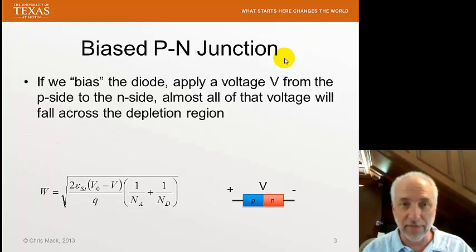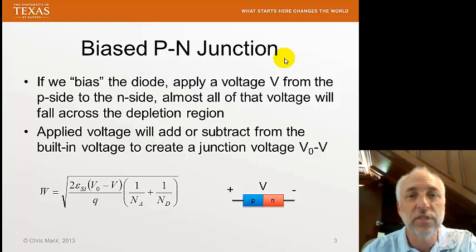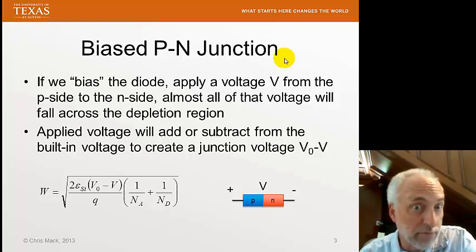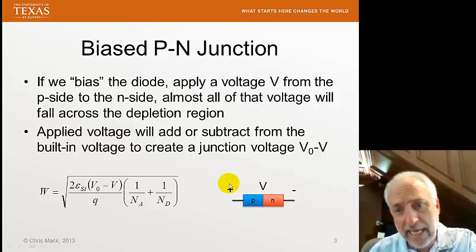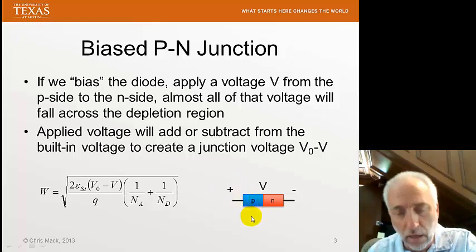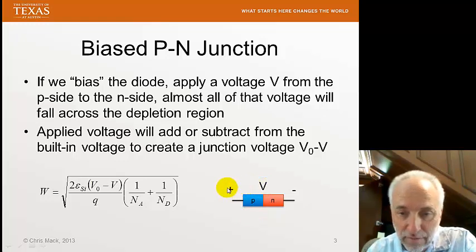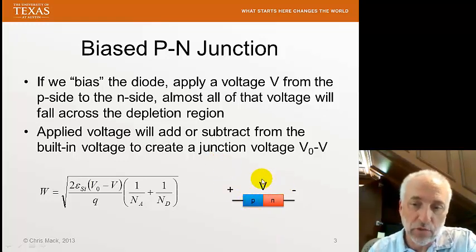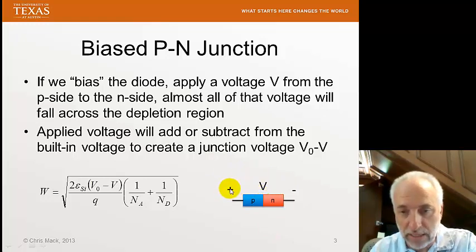Does a PN junction behave like this? If we bias the diode, we apply a voltage from the P side to the inside. So I'm going to define my bias voltage as V. And when I put a plus bias voltage on the P side, I'll call that a forward bias. If I put a negative voltage on the P side, I'll call that a reverse bias. So the voltage V will have a sign convention that V is positive if I put a positive voltage on the P side.